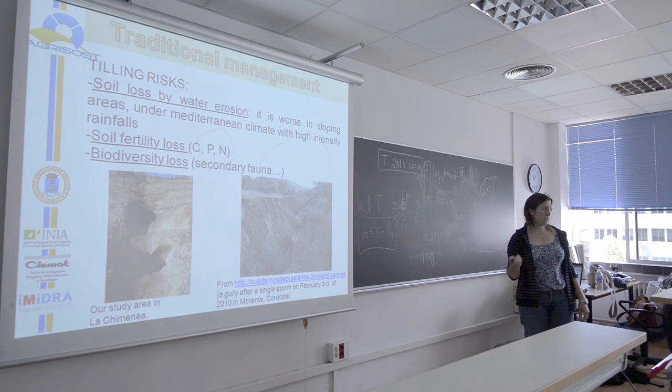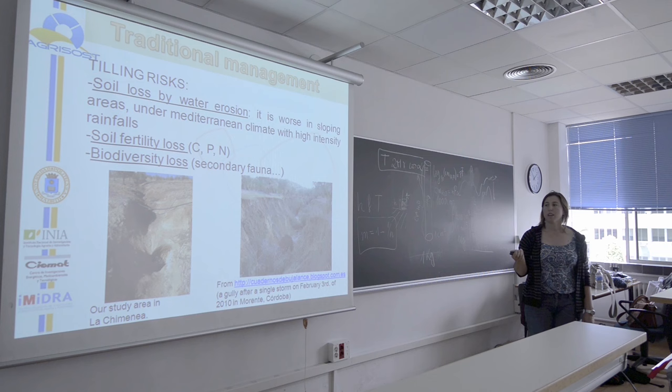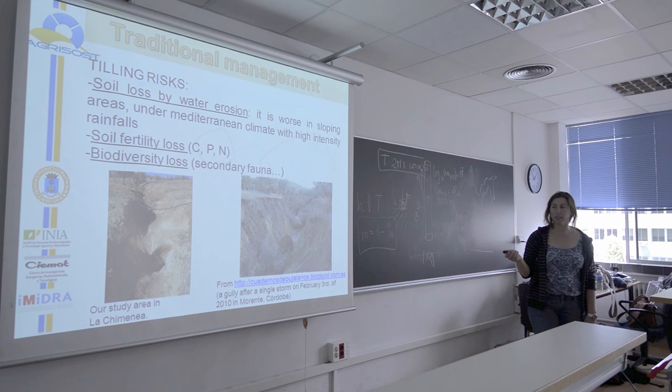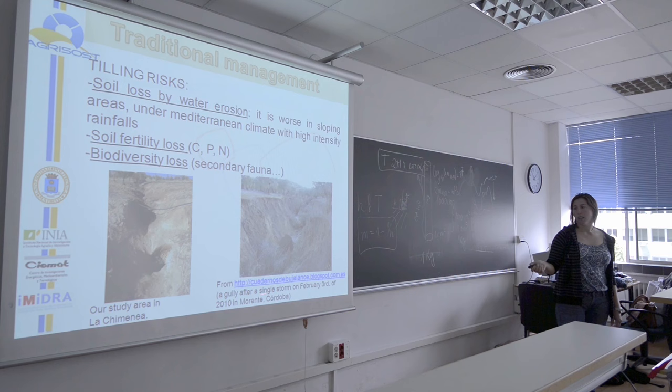With the soil, nutrients are lost too — carbon, phosphorus, nitrogen — so we are losing fertility in the soil. We are also losing biodiversity, mainly microorganisms of the soil, and secondary fauna that have the function to control some plagues in the early growth of the ecosystem.